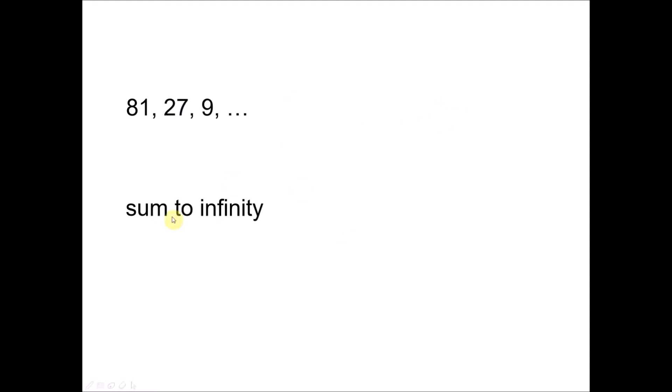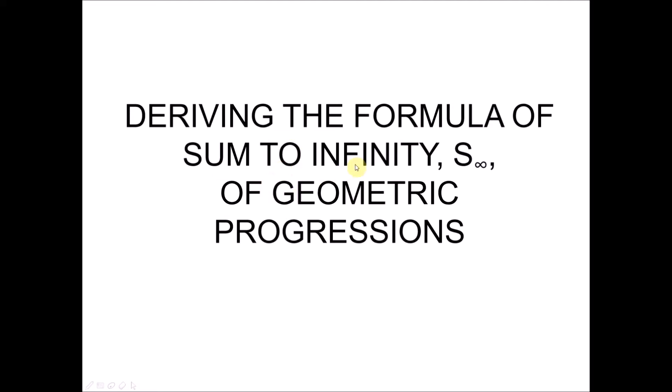Let's look at a simple example. Given a geometric progression starting with 81, then 27, then 9, and it goes on. You can see that the values become smaller and smaller. So what if we want to total up all the terms? We take 81 plus 27 plus 9 and add up until the term at infinity. This is what we call sum to infinity. It is not possible to add one by one, so we derive a formula to determine the value of the sum to infinity.